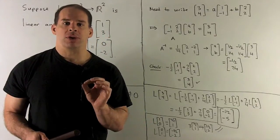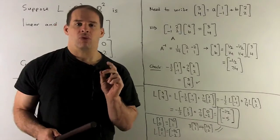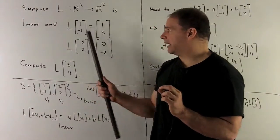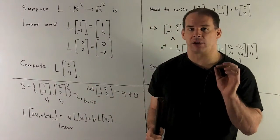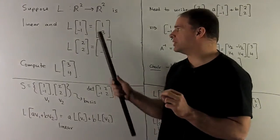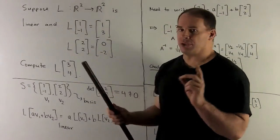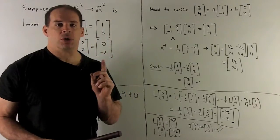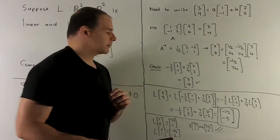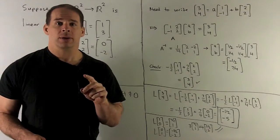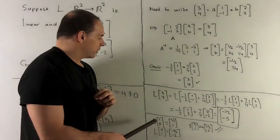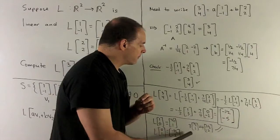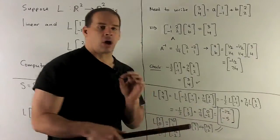We could have solved this problem in another manner. Rather than writing (3, 4) as a linear combination of the given vectors, I could figure out what L does on the standard basis (1, 0) and (0, 1). Working that out by the same method gives L of (1, 0) = (1/2, 1) and L of (0, 1) = (−1/2, −2). Applying the same trick — L on (3, 4) as 3·(1,0) plus 4·(0,1) — we get the same answer, confirming our original calculation.